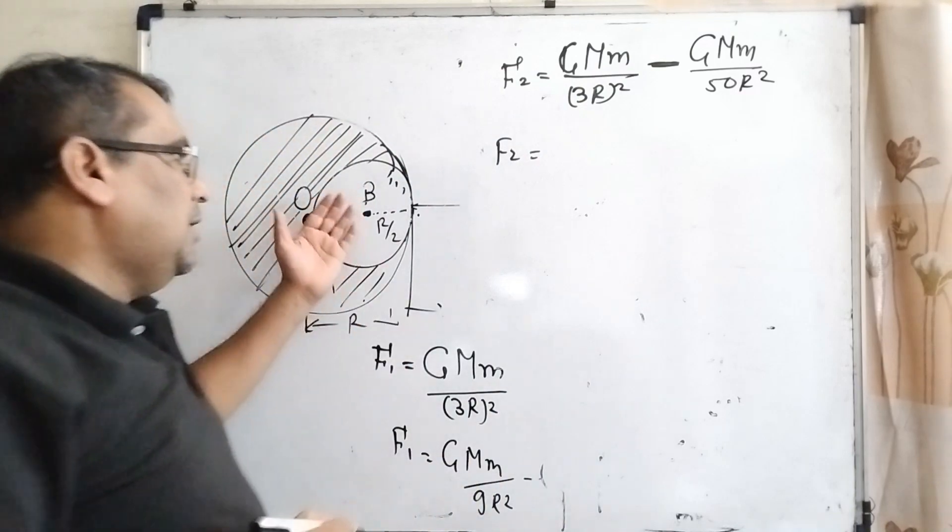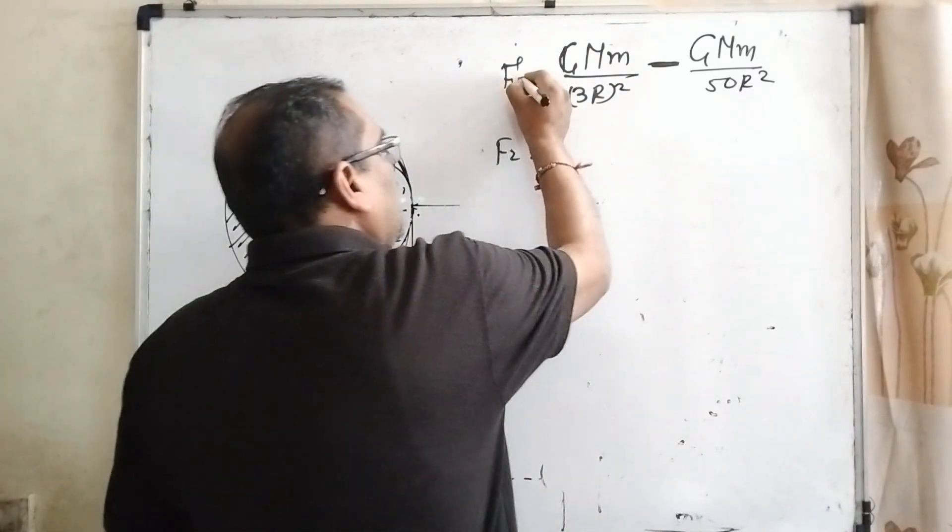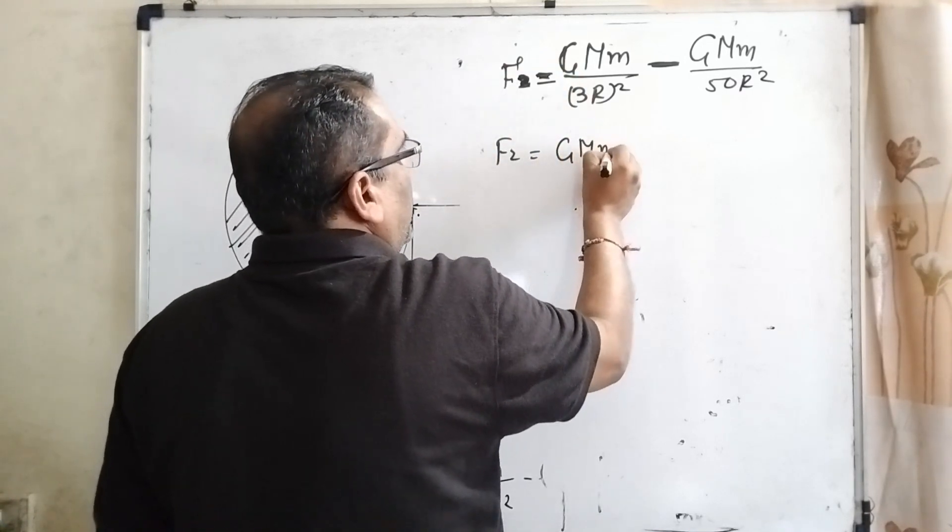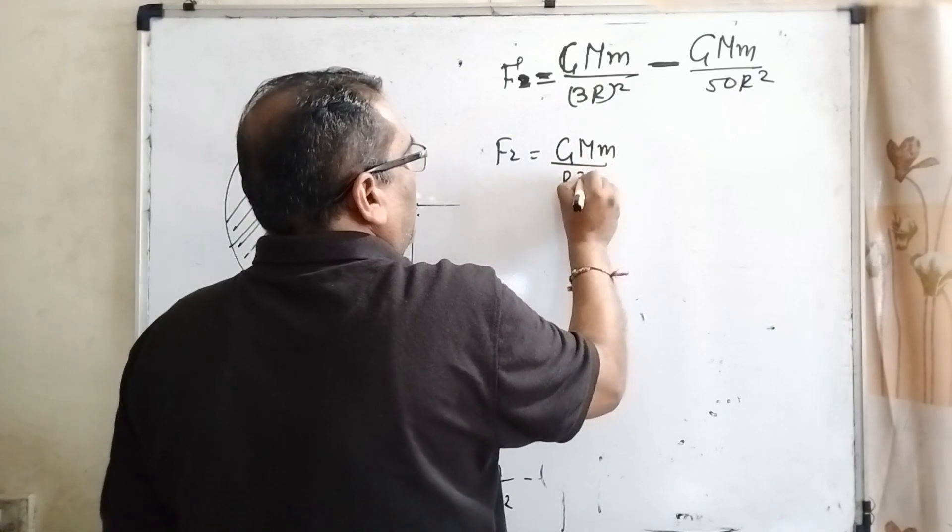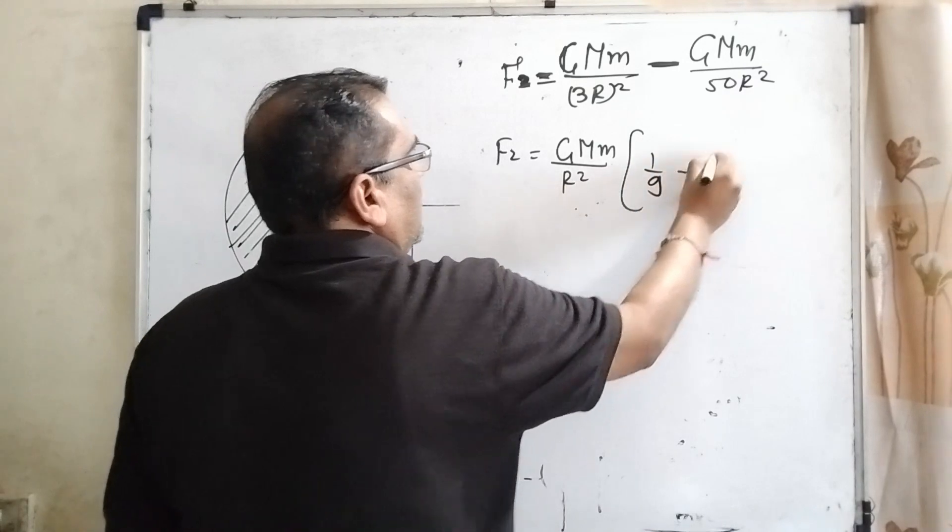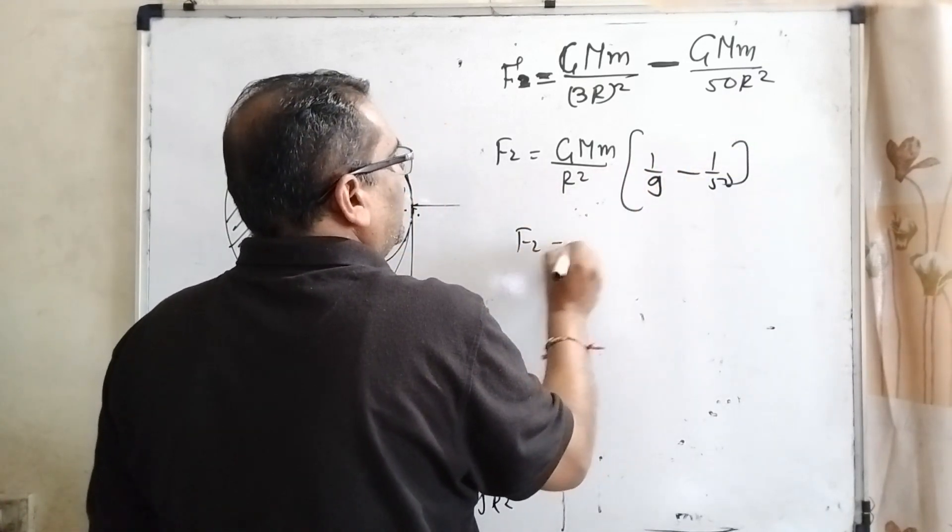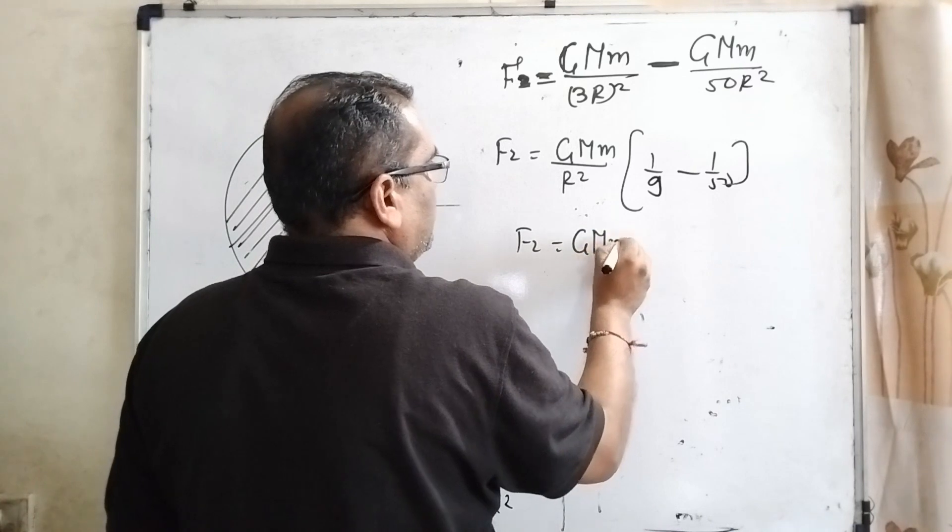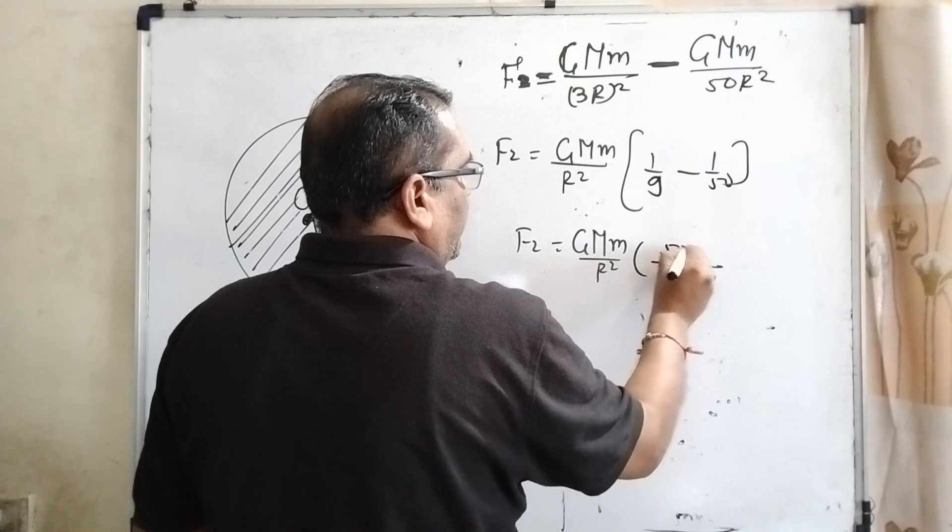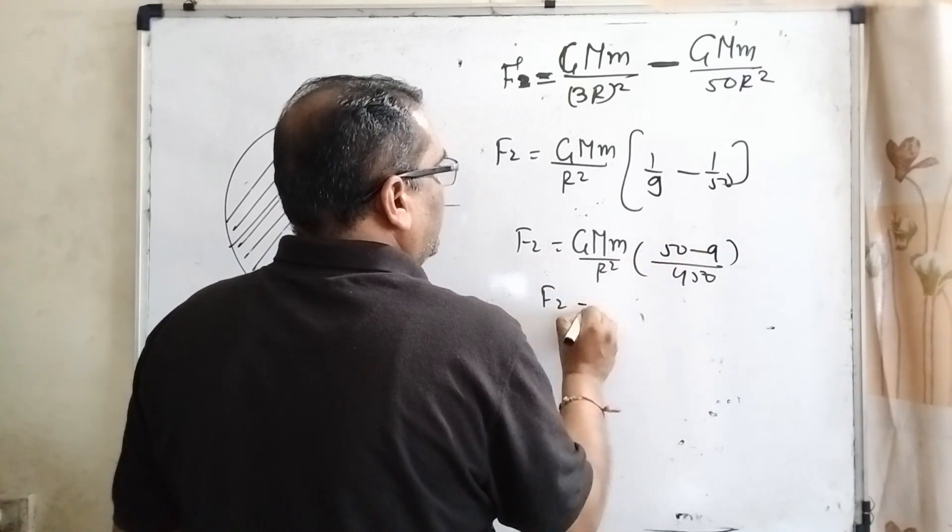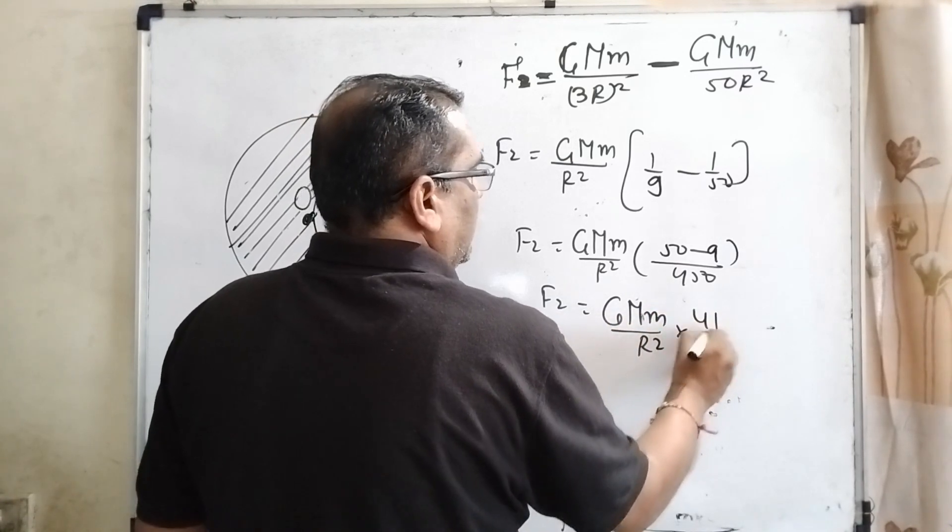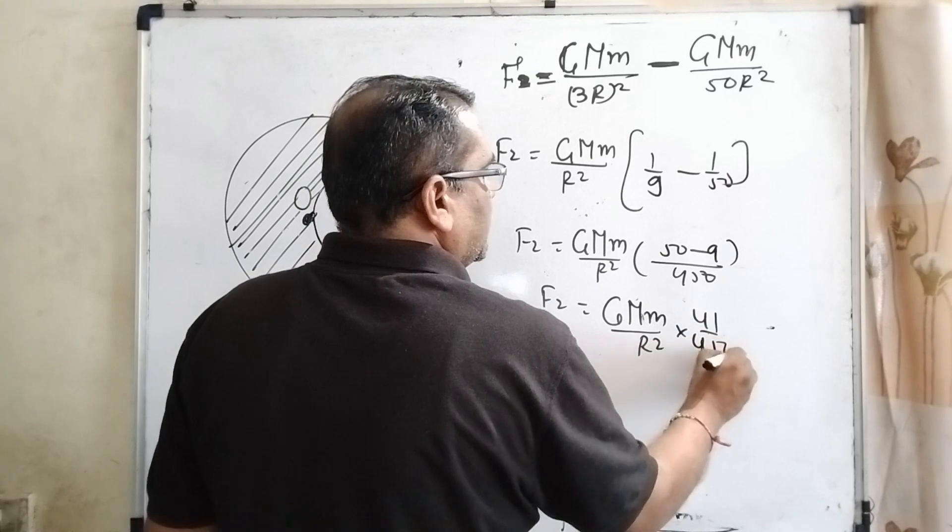Because it is minus, some mass is reduced from this. So therefore, new F2, this new force becomes F2. G M small m and R square get common. Now, it becomes 1 by 9. 3 square means 1 by 9, 1 by 50. Then, what is F2? G capital M small m R square taking the LCM 450. Now, it becomes 50 minus 9. Then, F2 equal to G capital M small m R square 41 upon 450. So, this is F2.